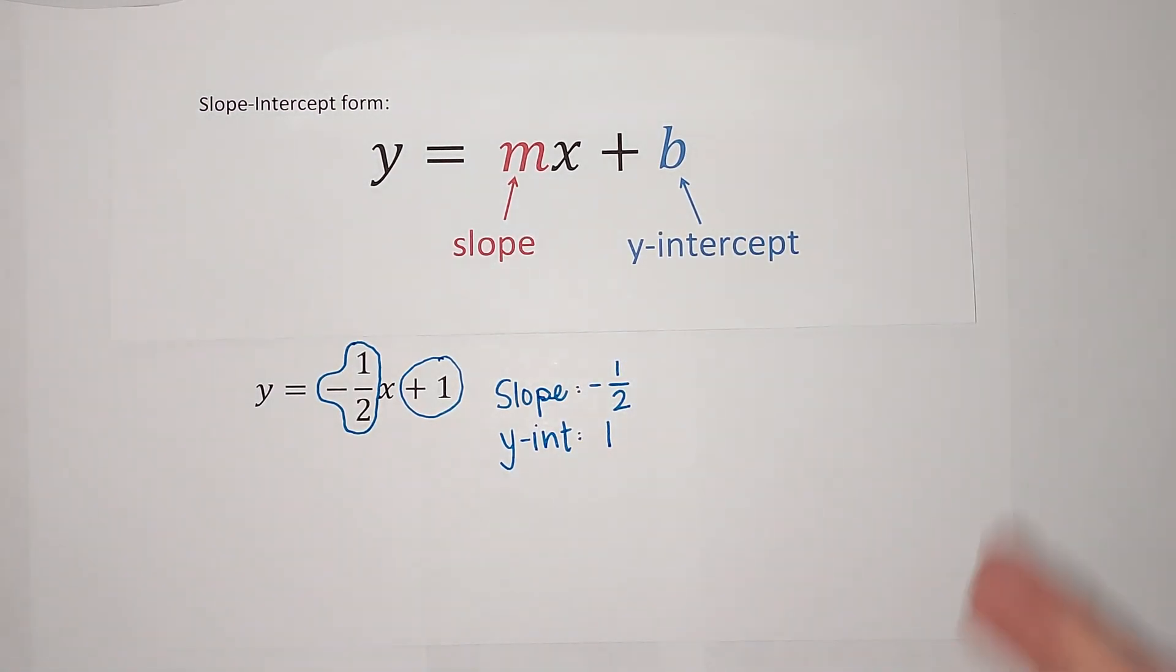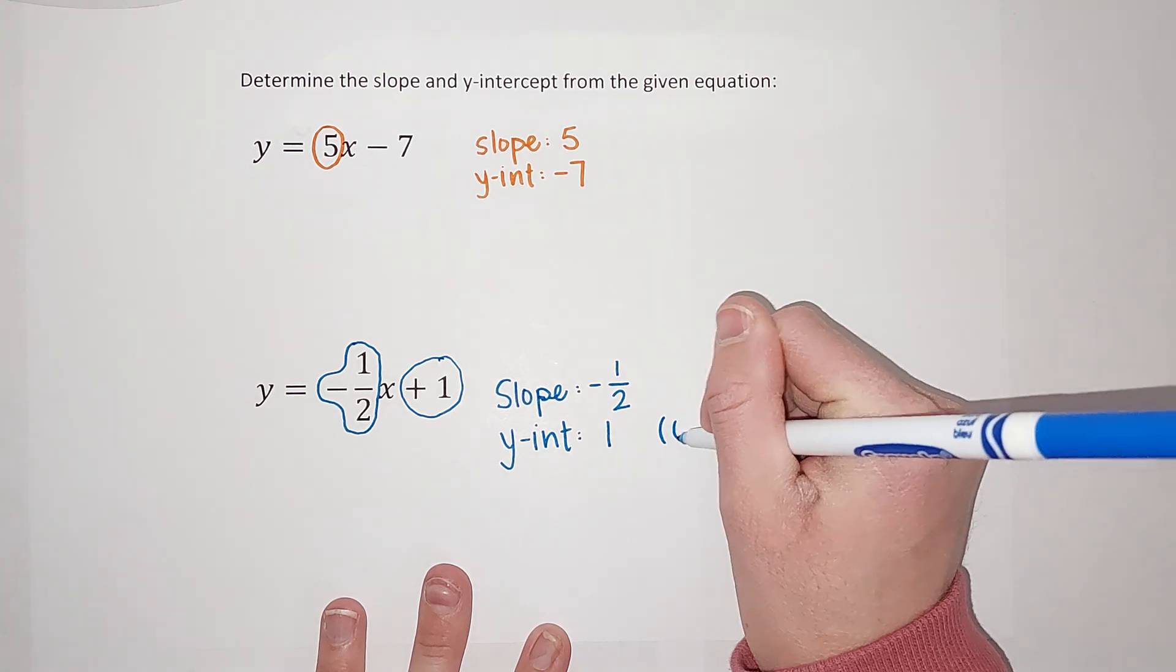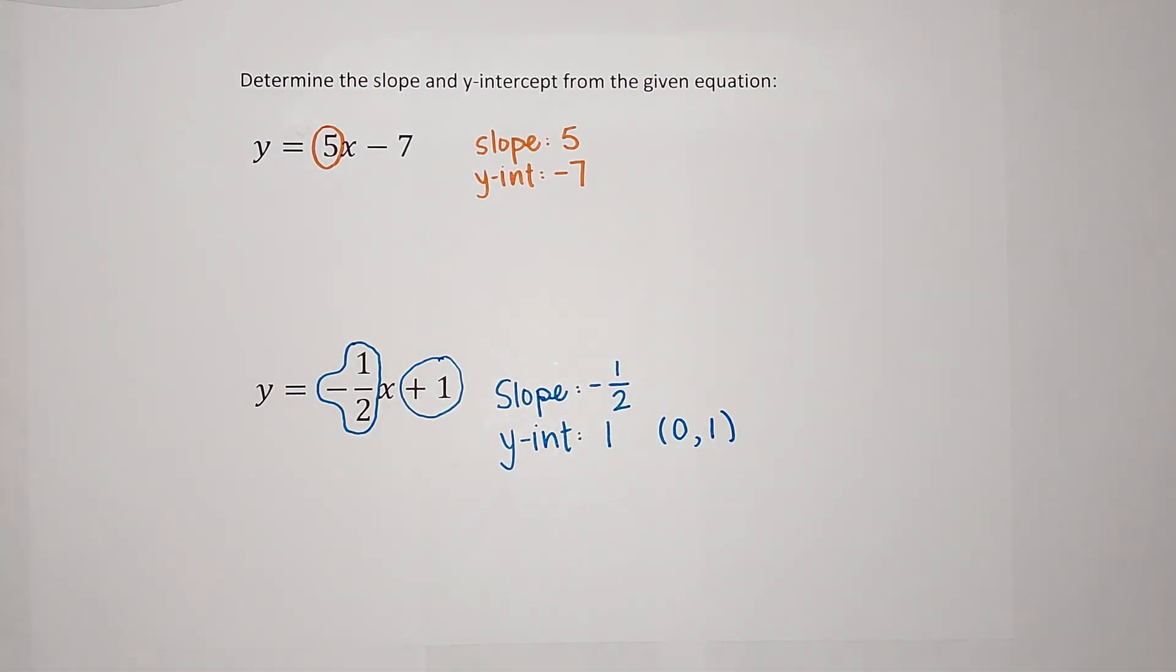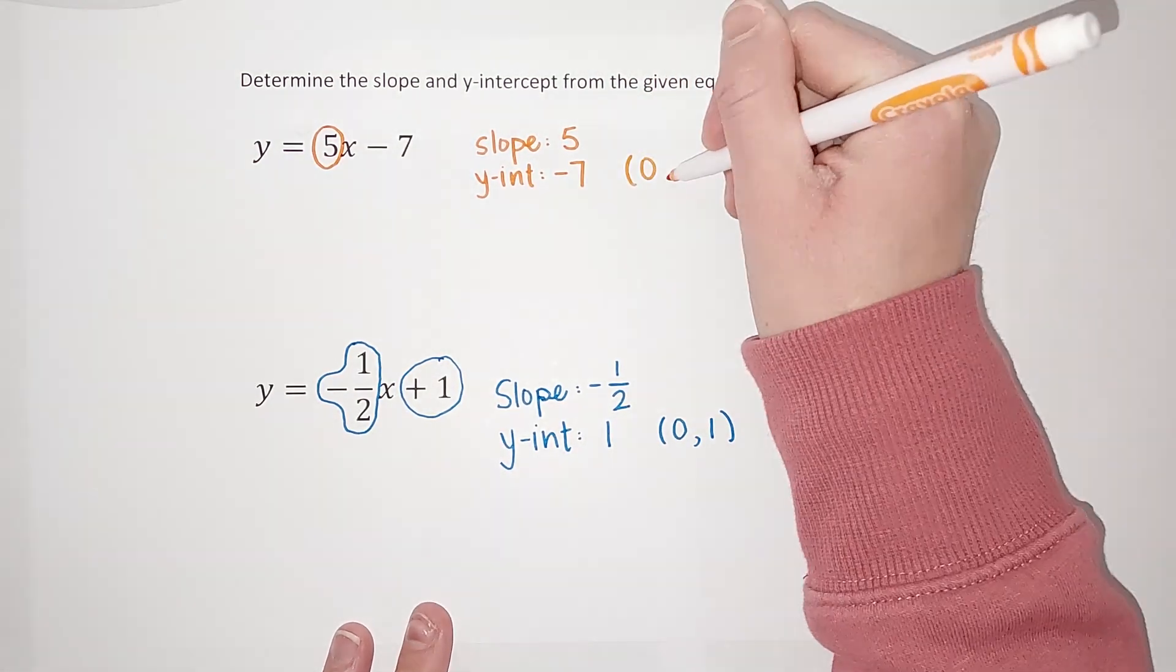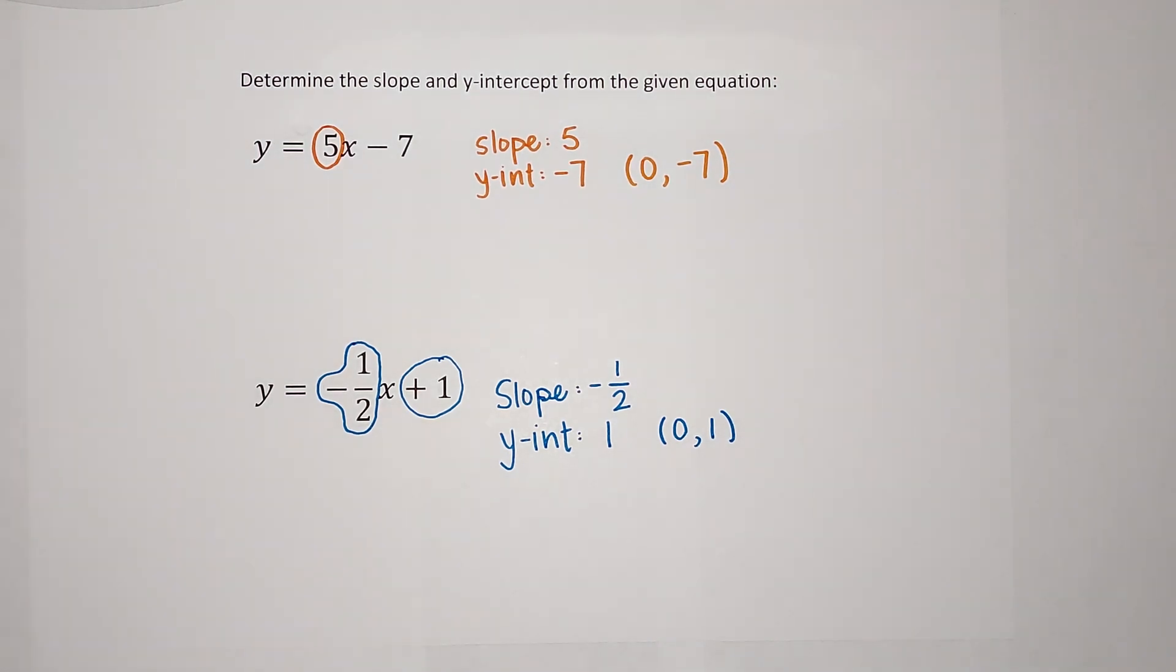So, in this case, my y-intercept is 1. And I should say, we could write the y-intercepts as ordered pairs. And if we did, the ordered pair would be 0, 1. And on the other one, it would be 0, negative 7. Sorry, I should have done that from the beginning.